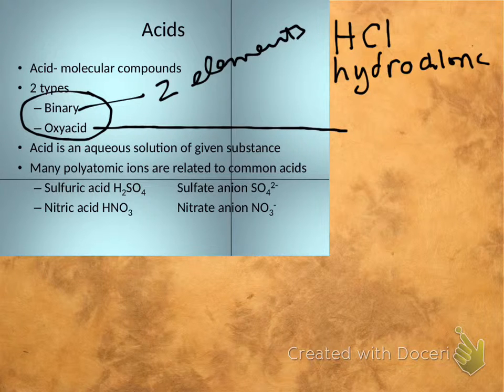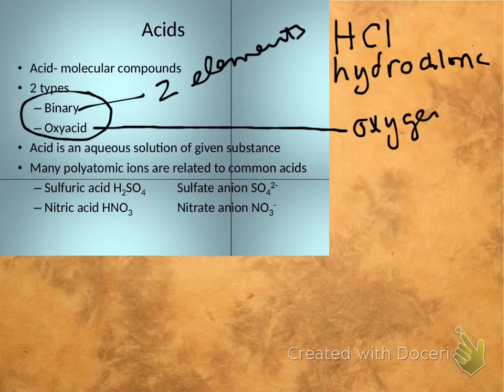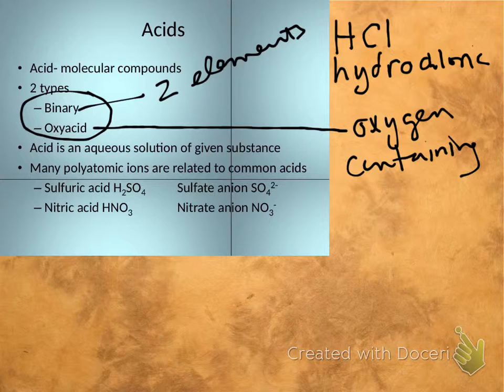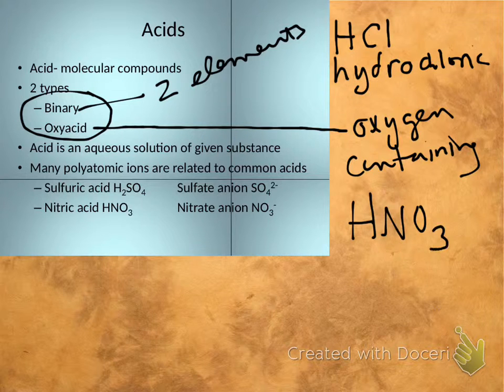The other big category of acid that we'll talk about are oxyacids. Guess what those have in them? Oxygen. Again, very creative. They are oxygen-containing. A good example of that, the oxyacids typically have three parts. So HNO3 is a hydrogen covalently bound basically to a nitrate ion. And that's nitric acid.